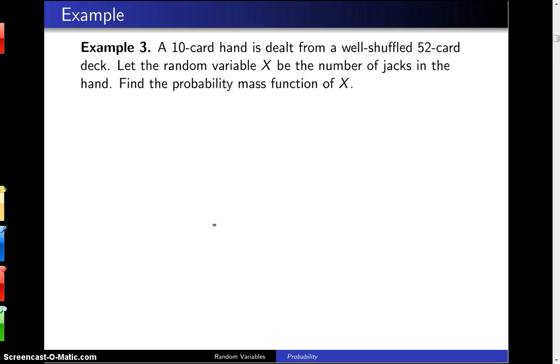A 10-card hand is dealt from a well-shuffled 52-card deck. Let the random variable X be the number of jacks in the hand. Find the probability mass function of X.